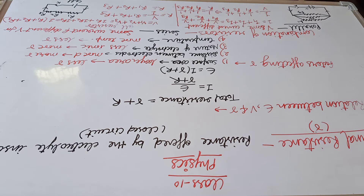Inside the electrolyte, when the current flows, because of the free electrons and the fixed positive ions, there is some loss of energy. Because of that, the potential difference is low, and the current flows with a low potential difference.